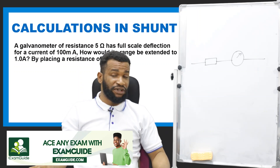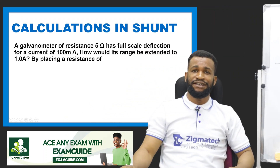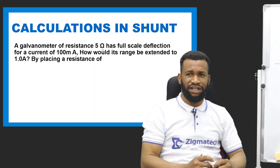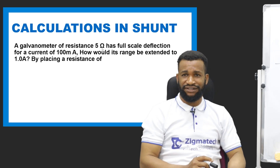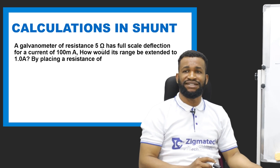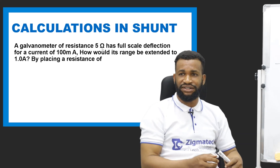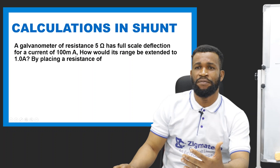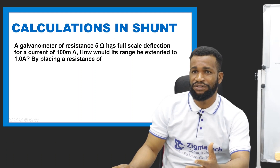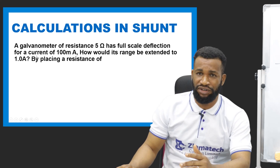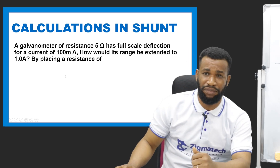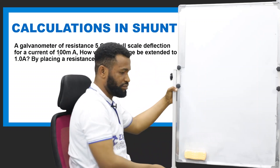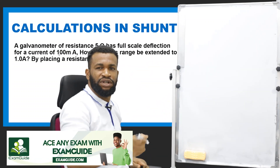Let's look at the first calculation. The first question says: a galvanometer of resistance 5 ohms has full-scale deflection for a current of 100 milliamperes. How would its range be extended to 1.0 ampere by placing a resistance? So we are looking for the resistance of the shunt. The first question to ask yourself is: is this a shunt or a multiplier? Since it is measuring current, you know it is a shunt. The resistance of the galvanometer is 5 ohms.